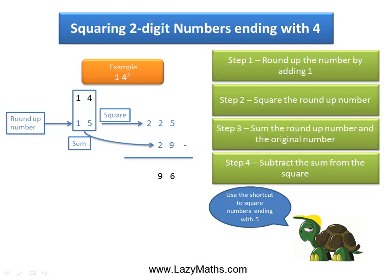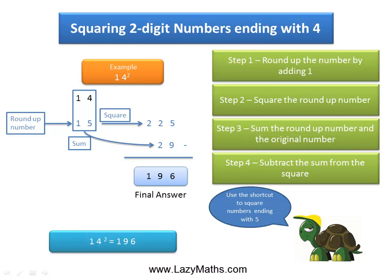So we get the final answer, which is 196. 225 minus 29 is 196, which is the final answer. And hence, 14 squared equals 196.